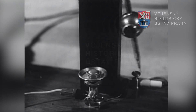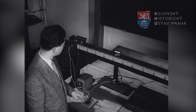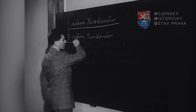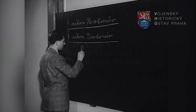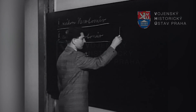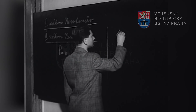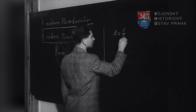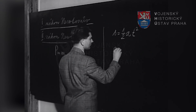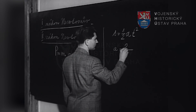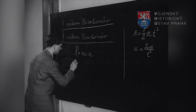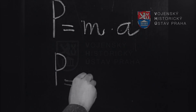Kyvadlovým chronometrem měříme čas potřebný k proběhnutí určité dráhy. Druhý pohybový zákon Newtonův stanoví, že síla je přímo úměrná součinu hmoty a zrychlení. Dráha se rovná polovičnímu součinu zrychlení se čtvercem času. Zrychlení se tedy rovná dvojnásobku dráhy dělenému čtvercem času. Tuto hodnotu dosadíme za zrychlení do rovnice změny hybnosti hmoty.